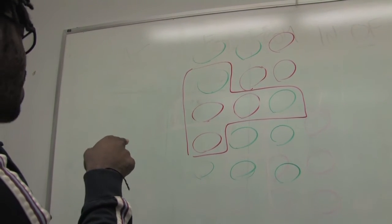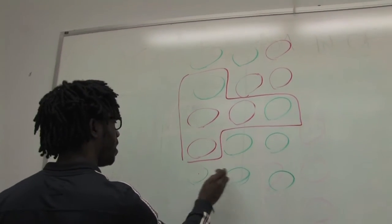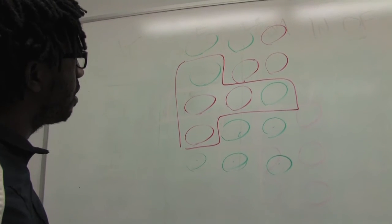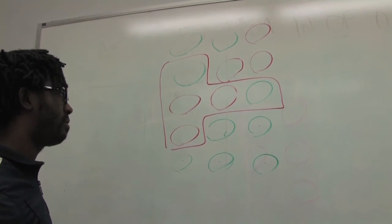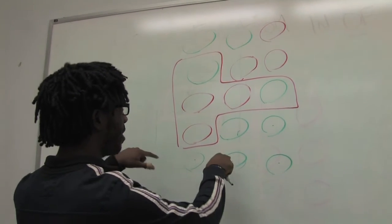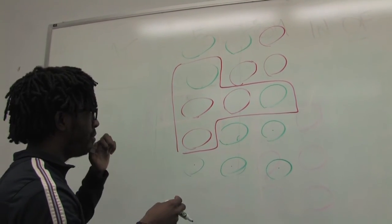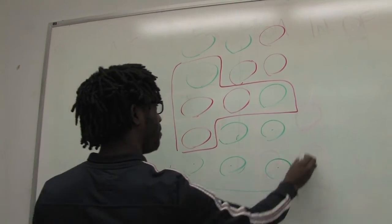This map is an example of packing. Right here would be an example of redrawing a map so that a certain group, in this case the green, the minority of the city, one of the minorities, is packed into one ward. So they're packed from here.